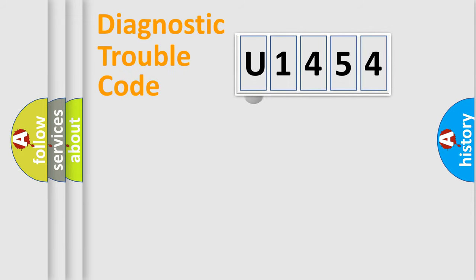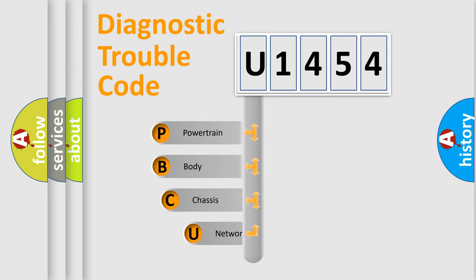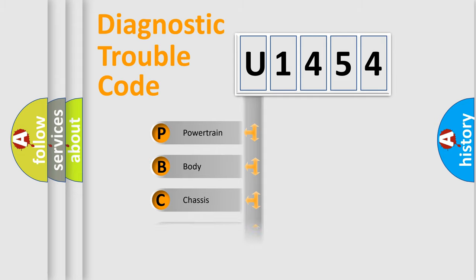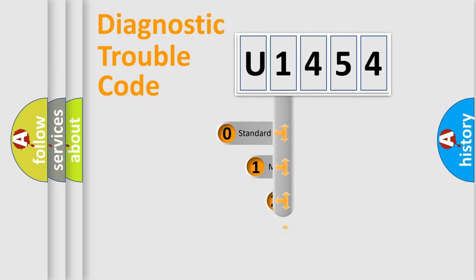First, let's look at the history of diagnostic fault code composition according to the OBD2 protocol, which is unified for all automakers since 2000. We divide the electric system of the automobile into four basic units: powertrain, body, chassis, and network. This distribution is defined in the first character of the code.